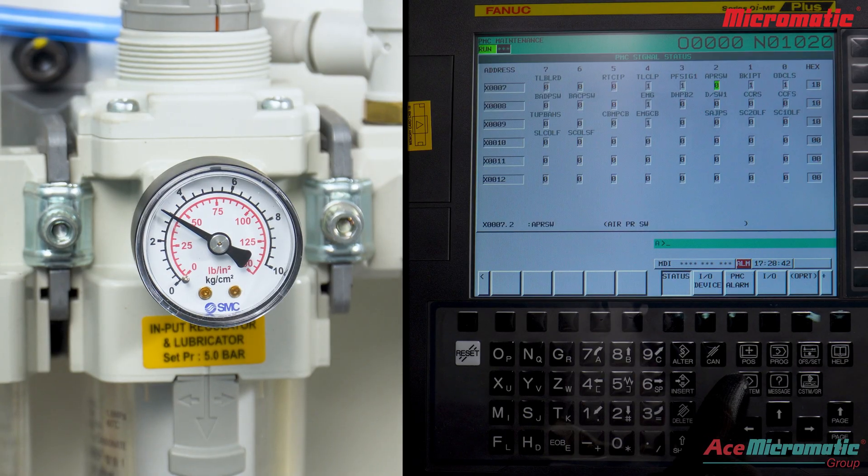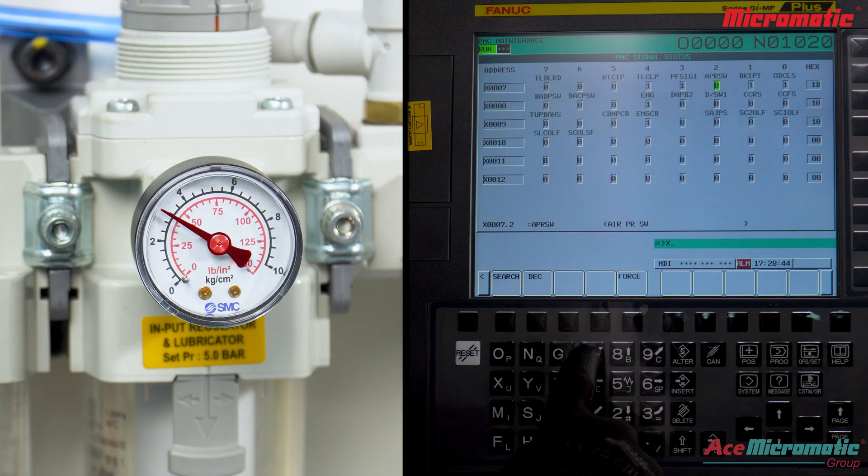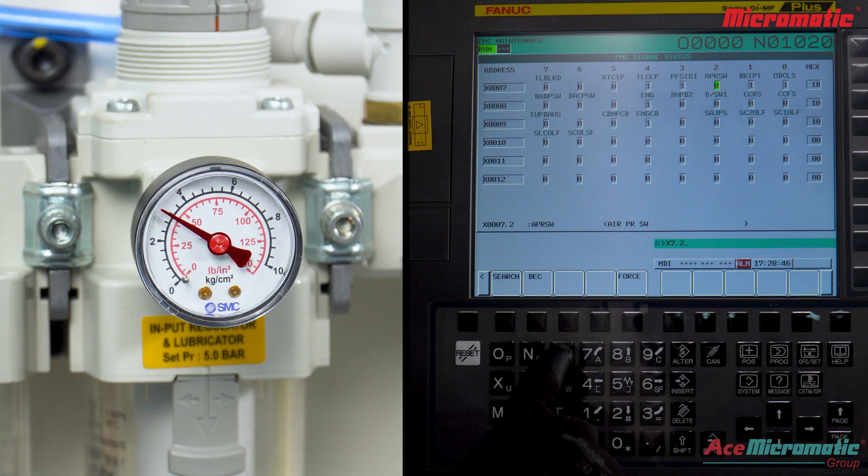First, check the main incoming pressure gauge. If the pressure is below 4 bar, X7.2 becomes 0.